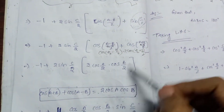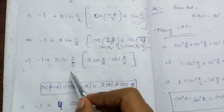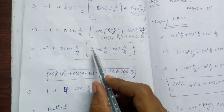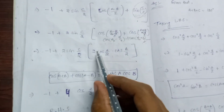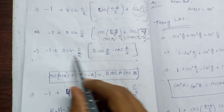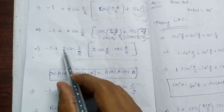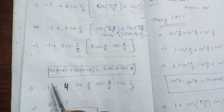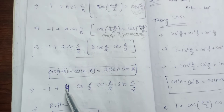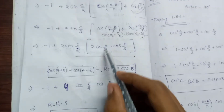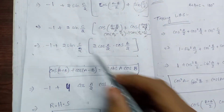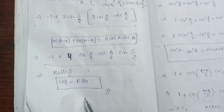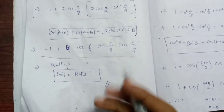Applying: cos((A-B)/2) plus cos((A+B)/2) equals 2 cos(A/2) cos(B/2). So the full expression becomes minus 1 plus 2 sin(C/2) times 2 cos(A/2) cos(B/2), which equals minus 1 plus 4 cos(A/2) cos(B/2) sin(C/2). Therefore LHS is equal to RHS. Hence proved.